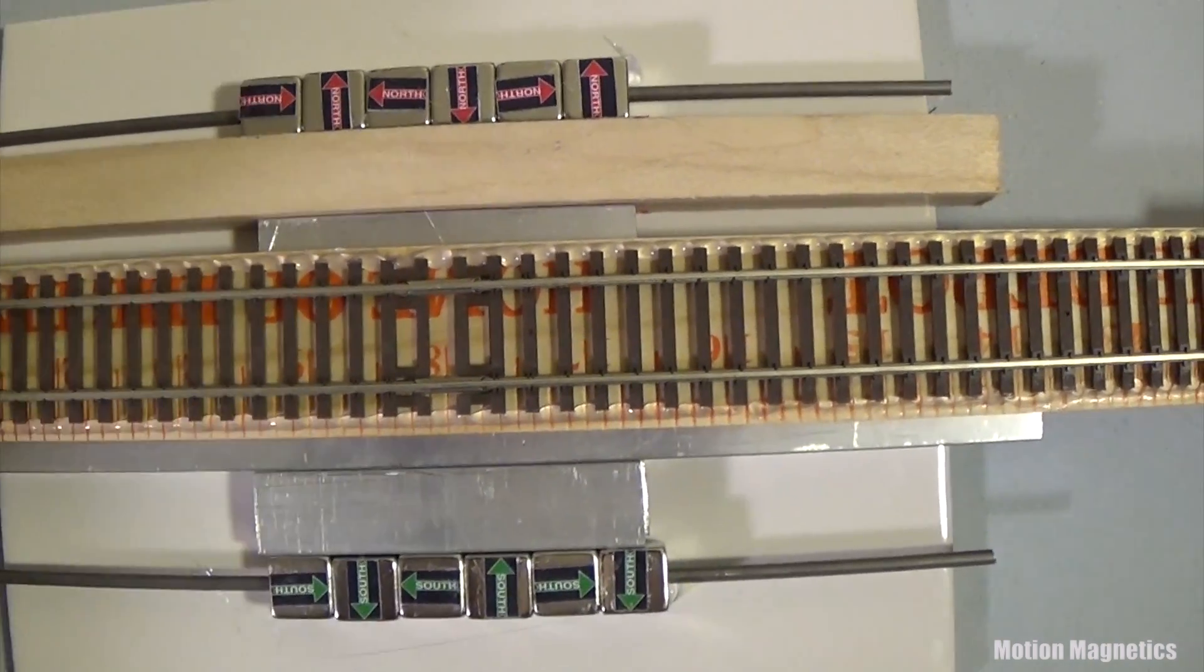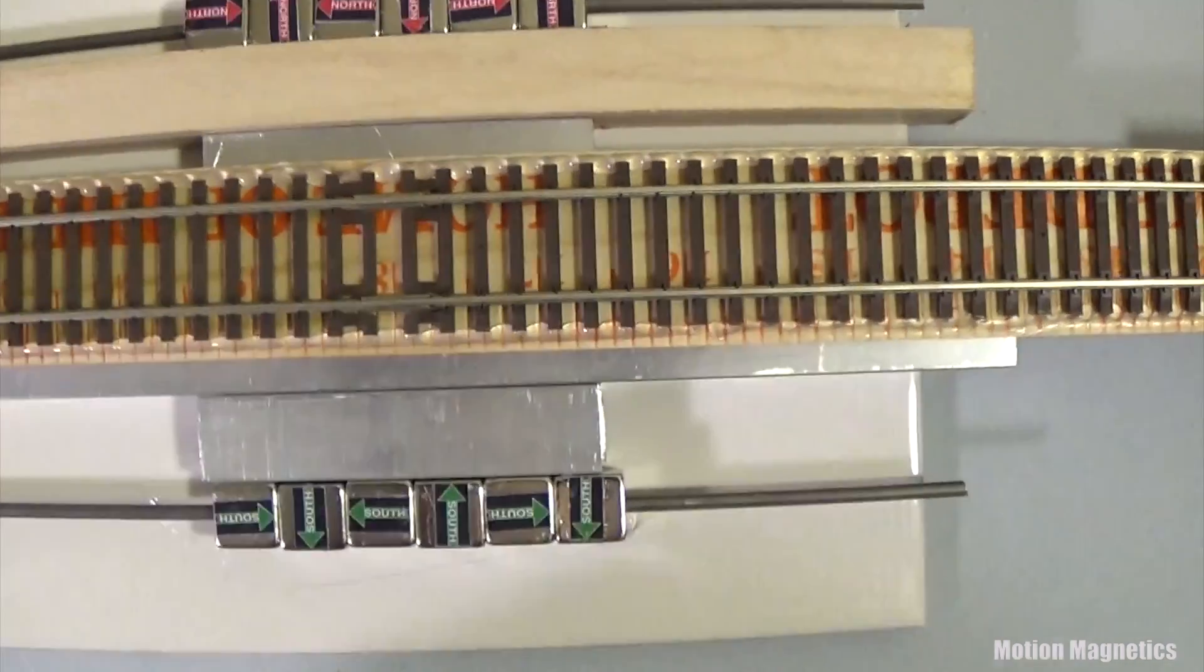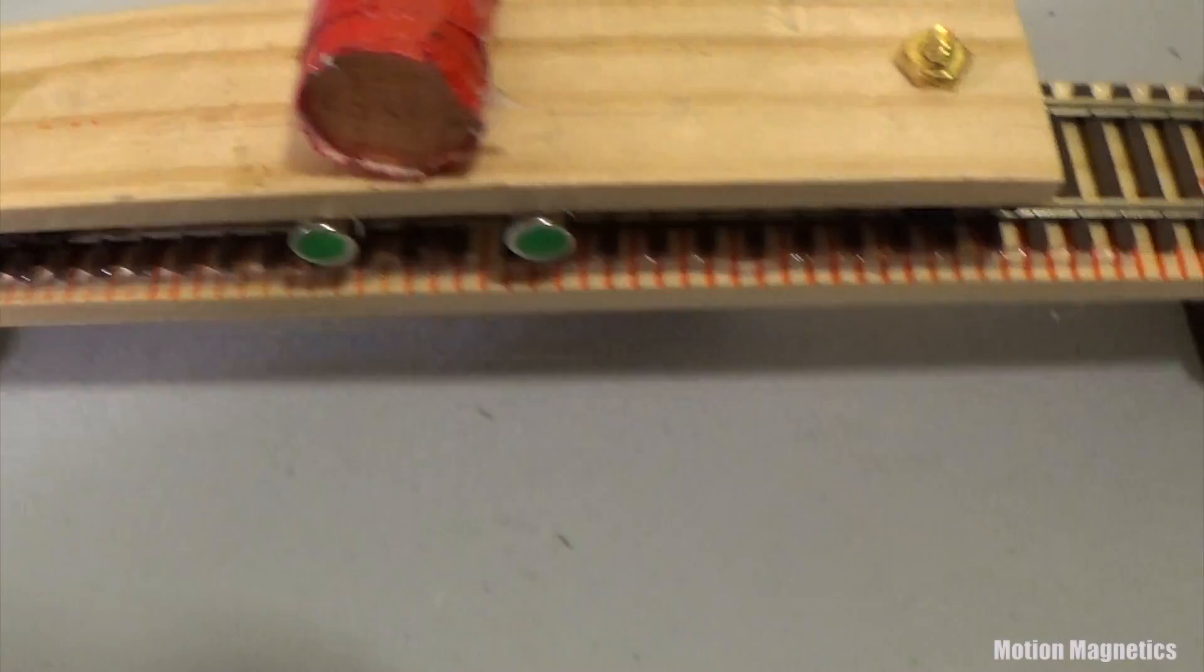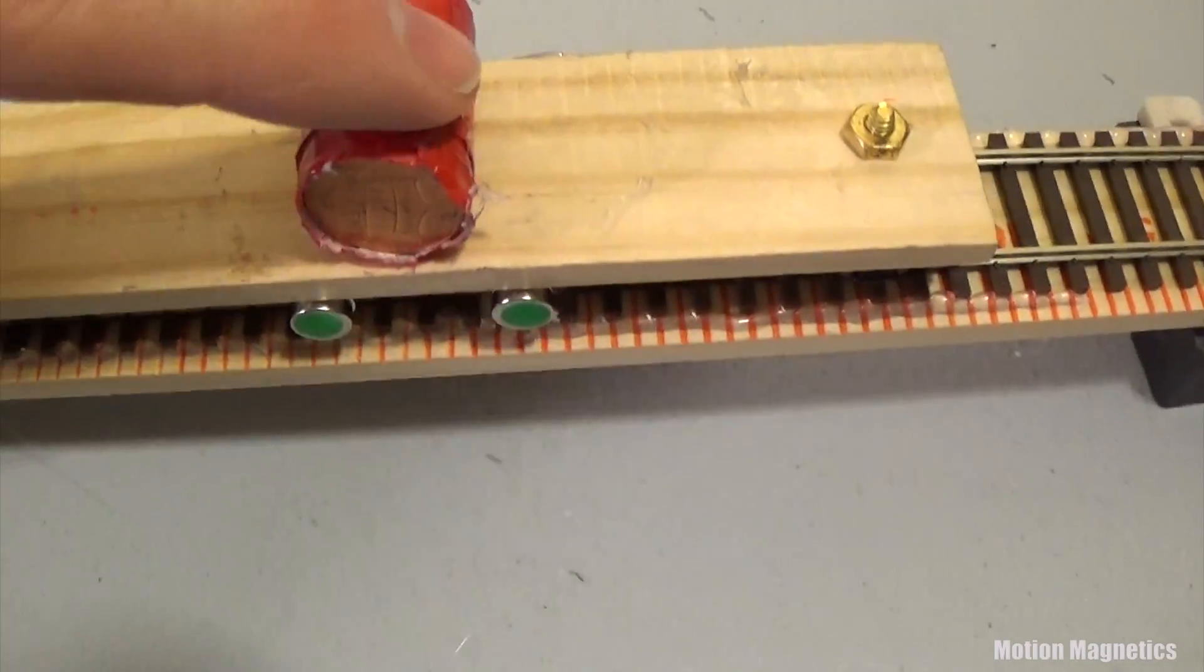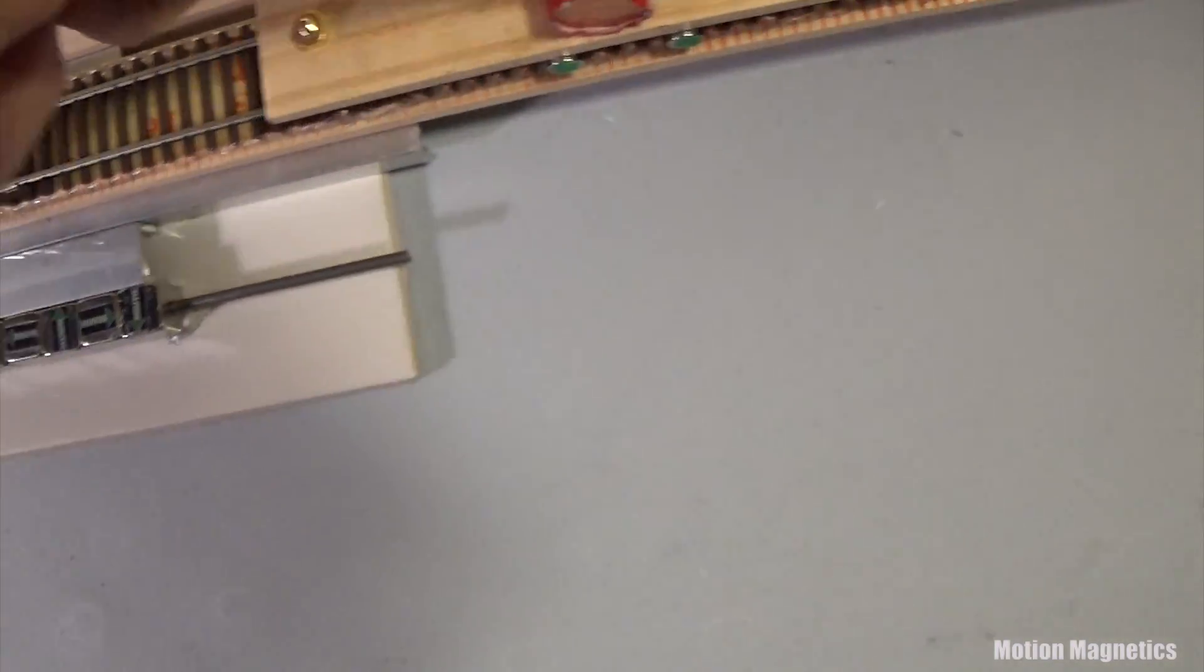I even tried flipping the Halbach Array so that it's backwards on this version. The most dramatic results were when I faced it this way.